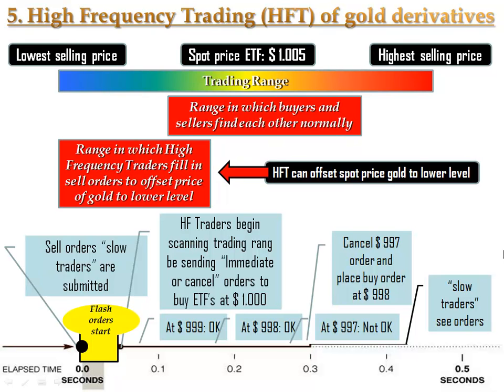Markets like Nasdaq offer trading firms the service of so-called flash orders that allow these firms to get a sneak peek at the buy and sell orders 30 milliseconds before they are shown to everyone else. For a human trader there is no use in obtaining a look at the orders 30 milliseconds before the rest of the traders.